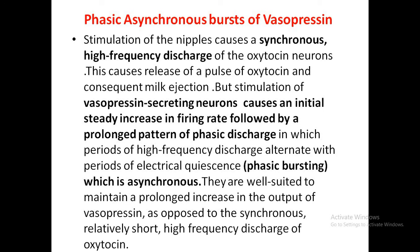Neurophysin release produces a huge pulse of oxytocin, which results in milk ejection. Vasopressin-secreting neurons, when stimulated, cause an initial steady rise and then a prolonged pattern of phasic discharge, in which there are high-frequency discharges alternating with no electrical activity in between. This asynchronous phasic burst maintains a prolonged increase in vasopressin output compared to oxytocin. Vasopressin receptors are of three types: V1A, V1B, and V2 — all are G protein-coupled. V1A and V1B act through phosphatidylinositol hydrolysis to increase intracellular calcium. V2 acts through Gs to increase cAMP. The overall effect is to increase permeability in the kidneys so that urine becomes more concentrated and urine volume decreases.